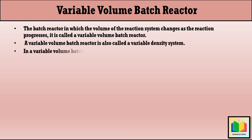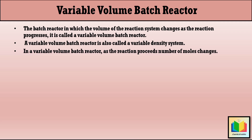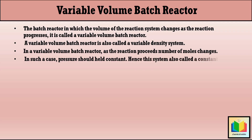In a variable volume batch reactor, as the reaction proceeds, the number of moles changes. In this type of reactor, mostly gas phase reactions are carried out where, at a given pressure and temperature, as the reaction progresses the number of moles changes. In such a case, pressure should be held constant. Hence the system is also called a constant pressure system.